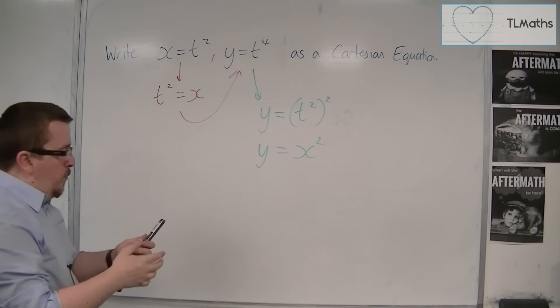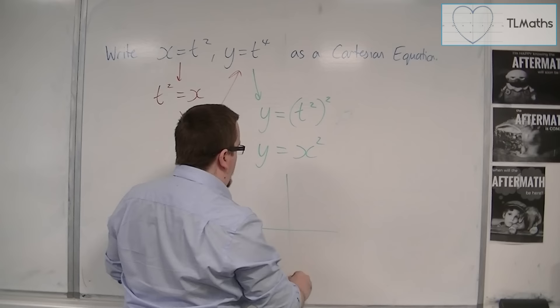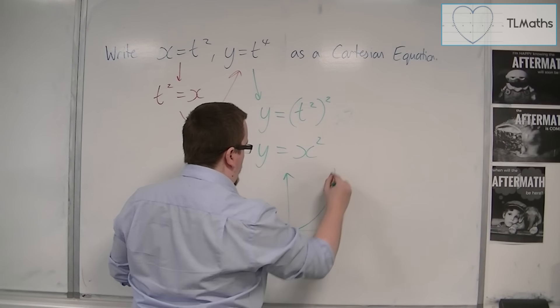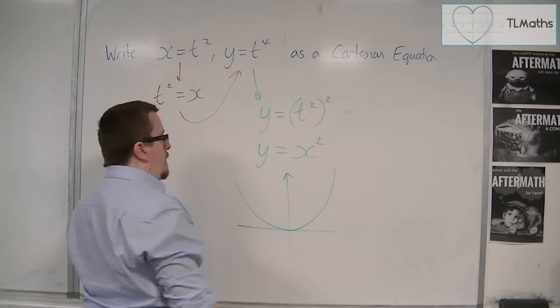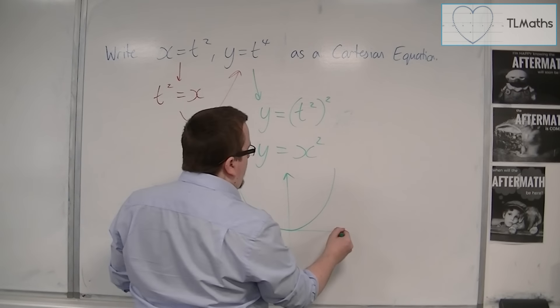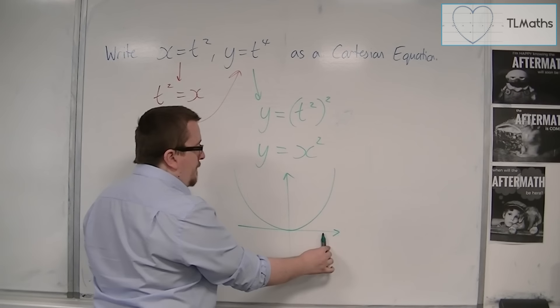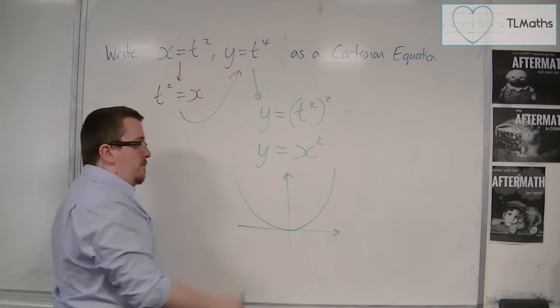Now, the reason why is because if I sketch y is equal to x squared, then what I get is this parabola here where x values, as you can see, can either be positive or negative.